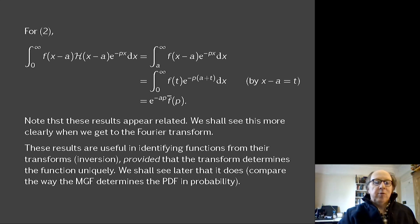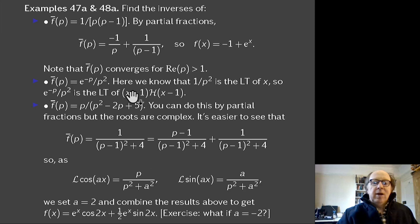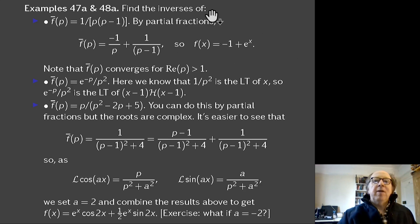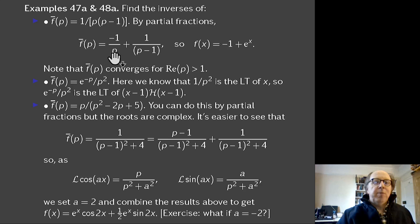We're assuming the function is uniquely determined by its transform — a result we'll come to later in the course. You may know the same result in probability, where the moment generating function uniquely determines the distribution. So we're going to end with some examples. Find the inverse of 1/(p(p−1)): put it into partial fractions. Covering up p and setting p = 0 gives coefficient −1; covering up (p−1) and setting p = 1 gives coefficient 1. So we have −1/p + 1/(p−1).